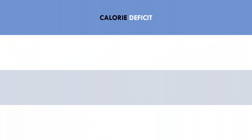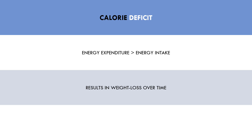First is a calorie deficit. A calorie deficit is when our energy expenditure is greater than our energy intake. In other words, we are eating fewer calories than we are burning. A calorie deficit, by definition, ultimately results in weight loss over time. This is because we are literally using more fuel than we are intaking. Whether this weight loss comes from fat, muscle, or other tissues is dependent on many other variables, but it should be understood that a calorie deficit will result in long-term weight loss.